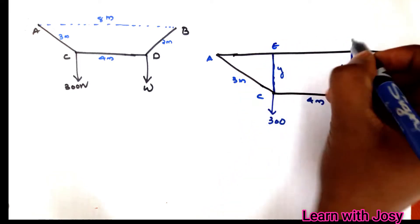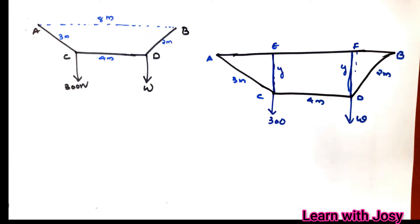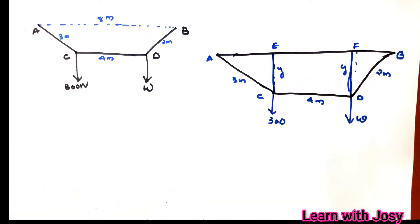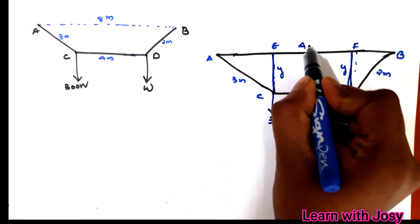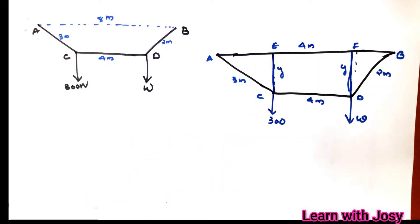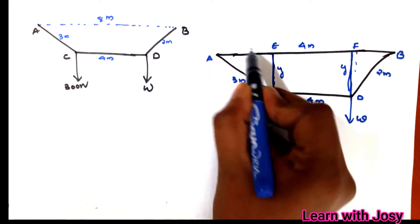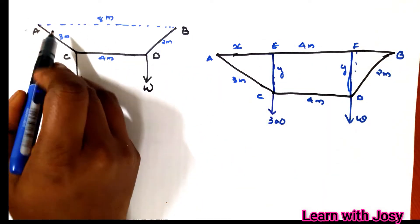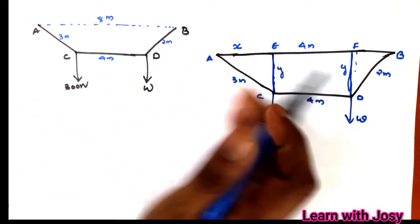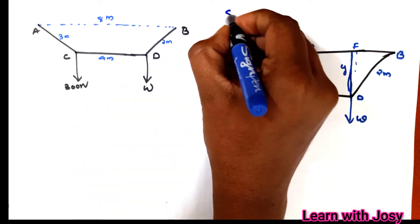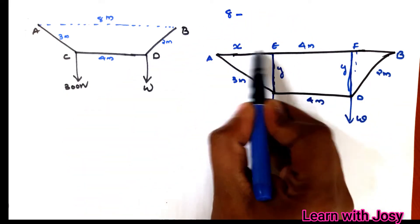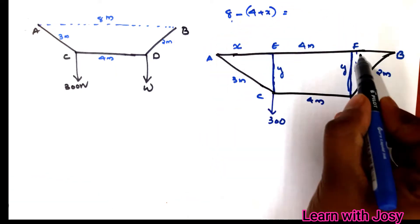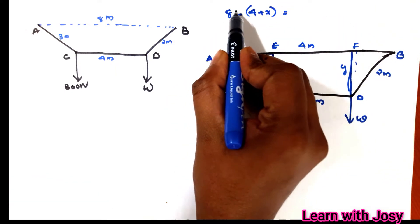Looking at this figure, we have a distance of 4 meters. If the distance from A to the foot of the vertical is x, and we need the total AB to be 8, then if we add 4 and x, the distance from F to B is 4 minus x.